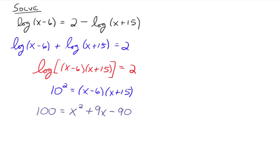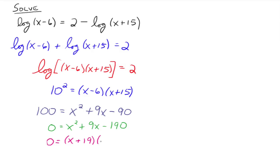This is a quadratic equation, so we get everything on one side and 0 on the other. We have x squared plus 9x minus 190 equals 0. Does that factor? We need factors of 190 that subtract to give 9, which gives us x plus 19 and x minus 10 equals 0. Setting each factor equal to 0, we get x equals negative 19 and x equals 10.